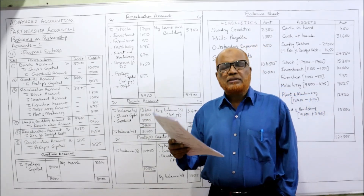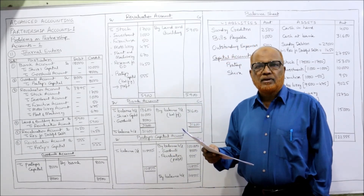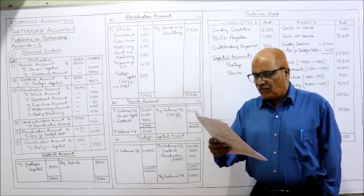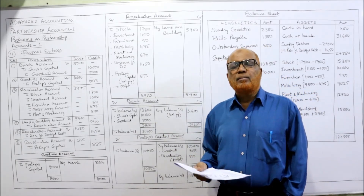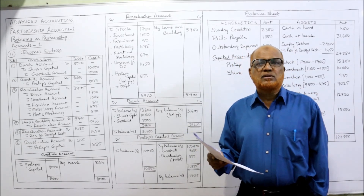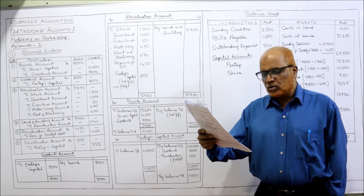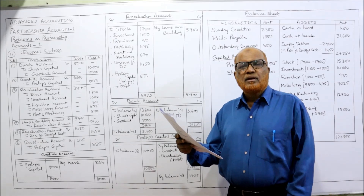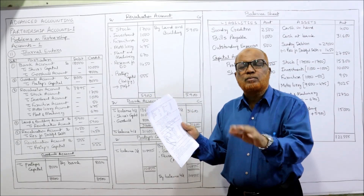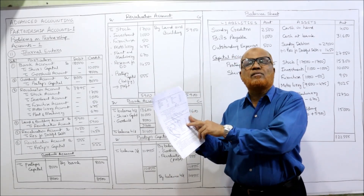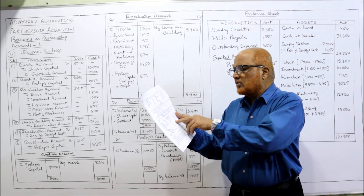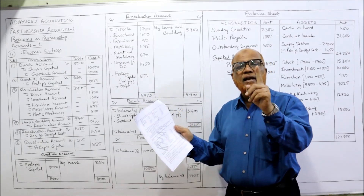Pratap decided to admit Shiva as a working partner on the following terms. Shiva would bring in ₹10,000 as his capital and pay ₹8,000 as premium (goodwill) for a one-fifth share in the business. The assets are to be revalued: stock to be reduced by 10% — book value is ₹17,000, so ₹1,700 is deducted. Investment to be reduced to ₹10,000 from book value of ₹11,000, a reduction of ₹1,000.